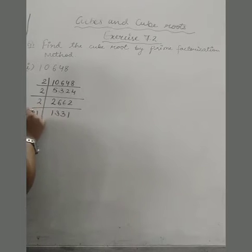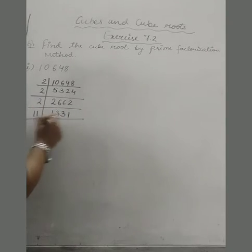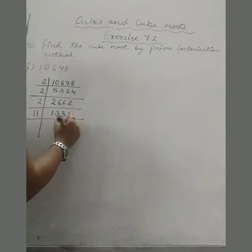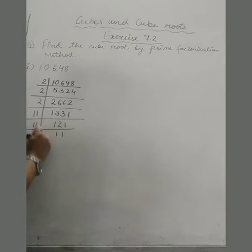Now here we will do with 11. 11 times 1 is 11, 11 times 1 is 22, 11 times 1 is 11, 11 times 1 is 11 and 11 times 1 is 11.